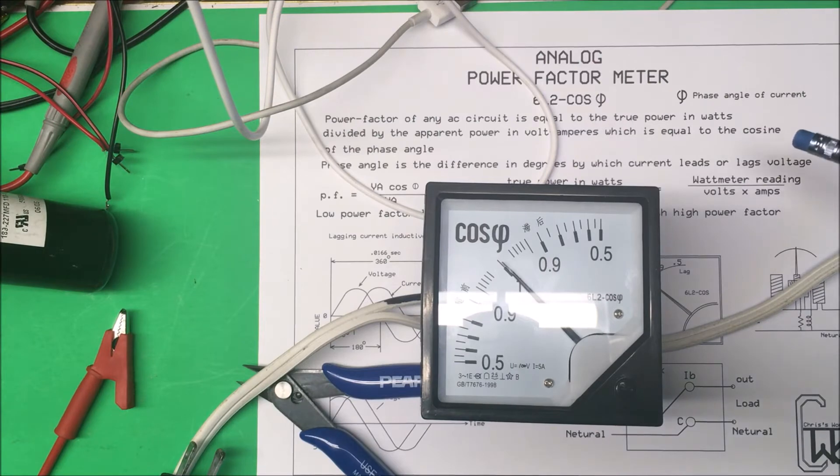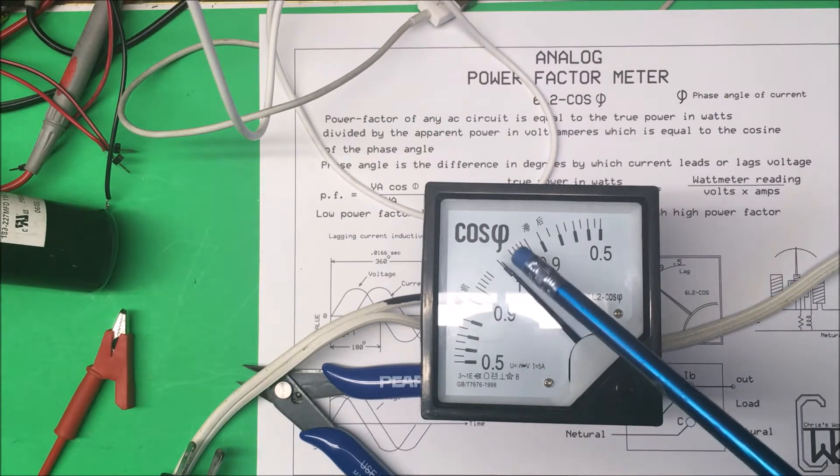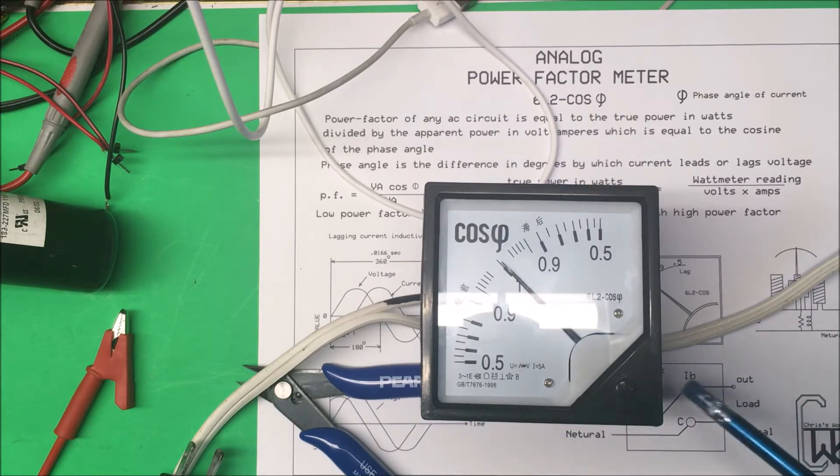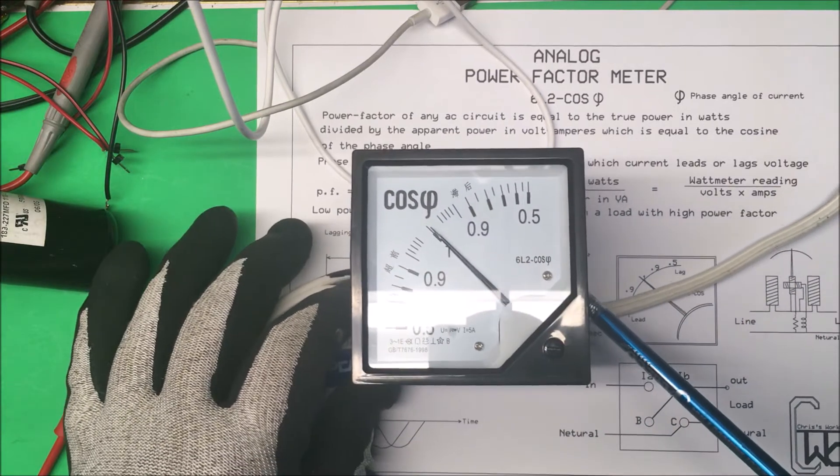Let's take a look at an analog power factor meter. This one here is supposed to give you the cosine of the phase angle of the current, that's what this symbol here is. To connect it up, here's a diagram.